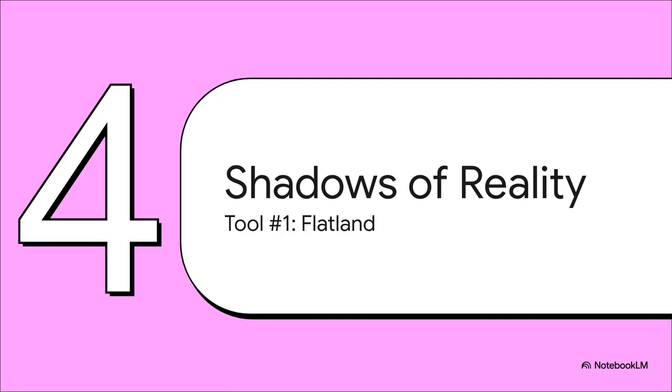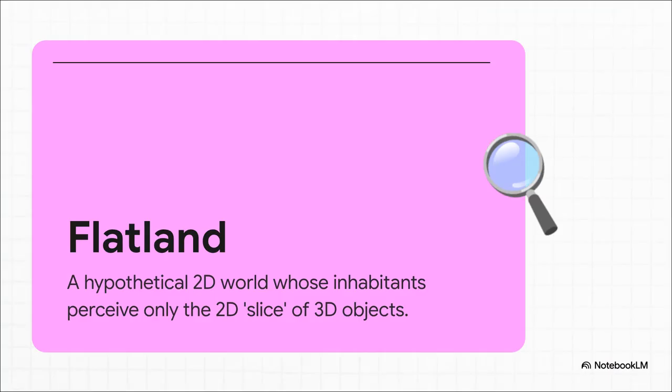Okay, first up, tool number one. This is a classic thought experiment, a real oldie but goodie called the flatland analogy. And it's absolutely brilliant for helping us imagine what higher dimensions might be like. So I want you to imagine a world that's perfectly flat, like literally a sheet of paper. And on this paper live 2D beings, squares, circles, triangles. They can move left and right, forward and back, but they have zero concept of up or down. Their entire reality is just that flat plane.